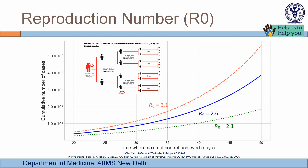The larger graph shows that for any given cumulative case number, an infection with a higher reproduction number reaches that number in less time compared to one with a lower reproduction number. This has critical clinical importance for the rapidity of spread and the urgency of containing infection.